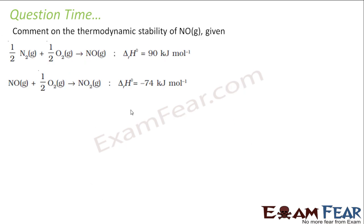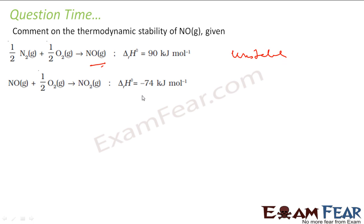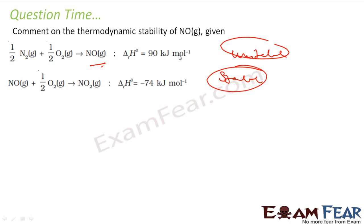We have to comment on the stability of NO and NO₂ given the equations: half N₂ plus half O₂ gives NO, and NO plus half O₂ gives NO₂. For the first equation — NO formation — delta H is positive, which means NO is unstable. For NO₂, delta H is negative, which means it is stable. So delta H negative means stable, and delta H positive means unstable.